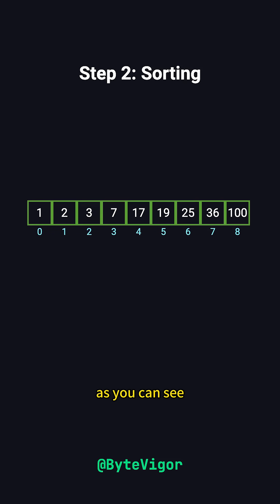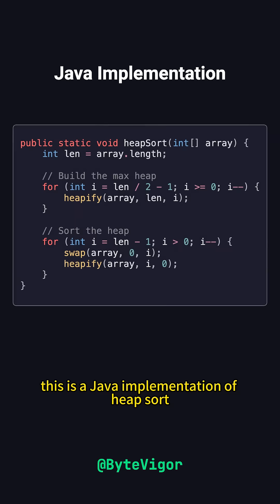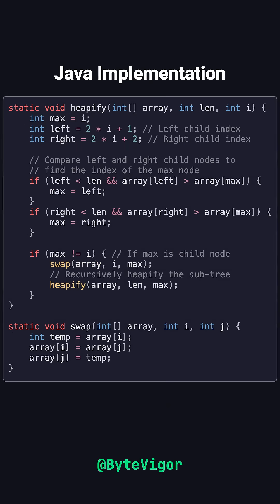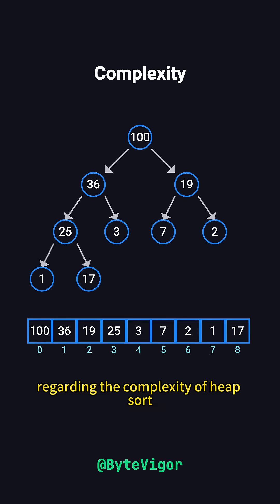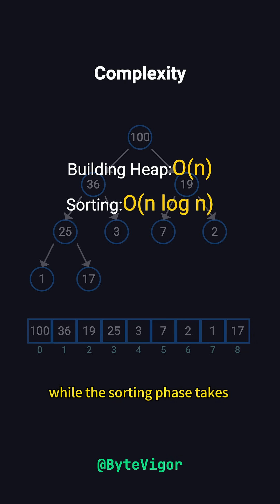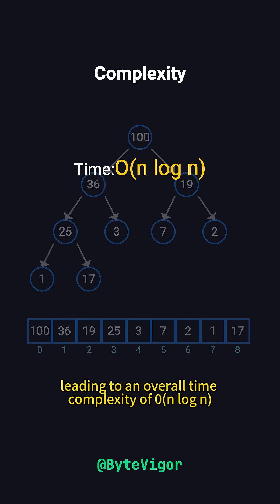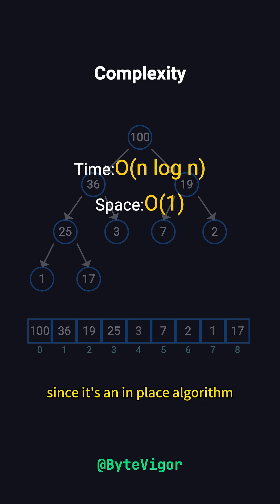As you can see, Heapsort is an in-place approach, making it both efficient and straightforward. This is a Java implementation of heap sort. Regarding the complexity of heap sort, building the max heap takes O(n), while the sorting phase takes O(n log n), leading to an overall time complexity of O(n log n). Since it's an in-place algorithm, its space complexity is O(1).